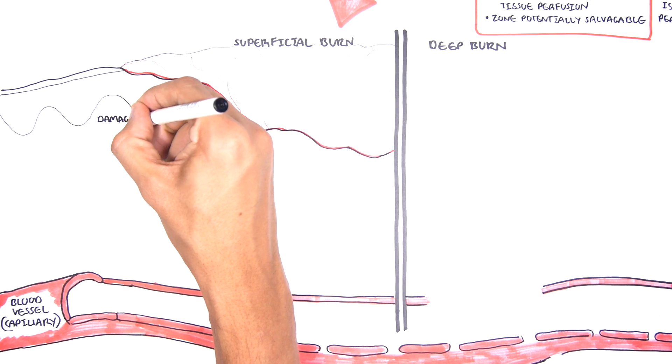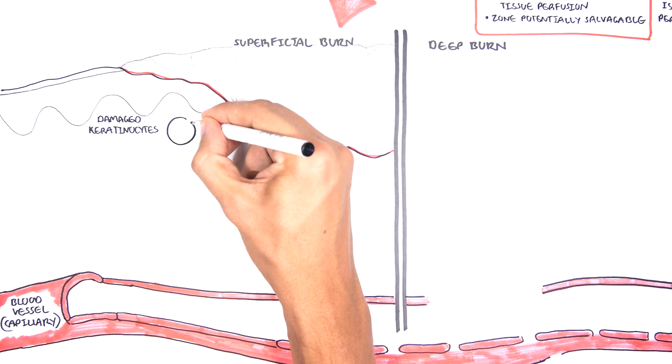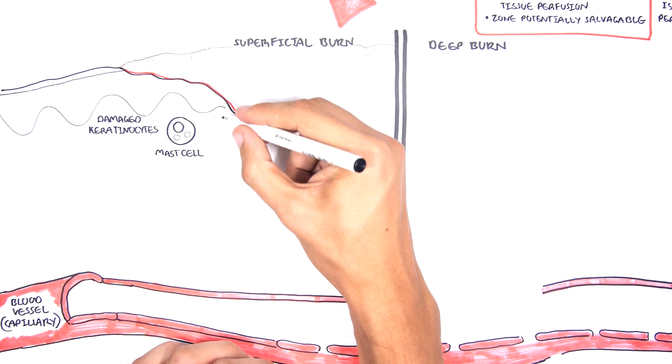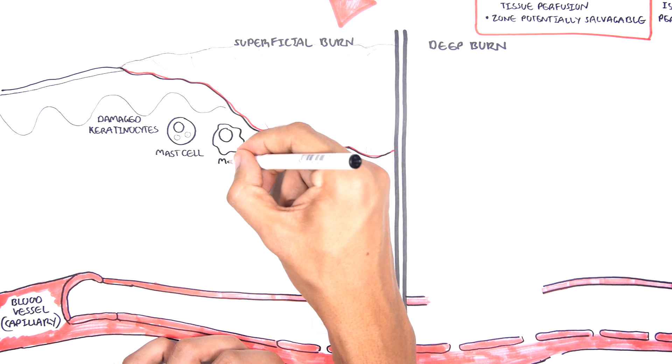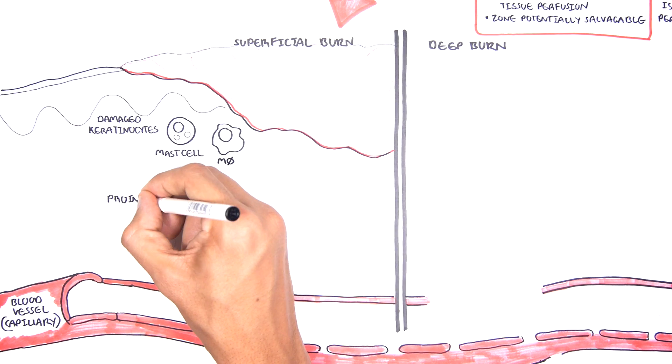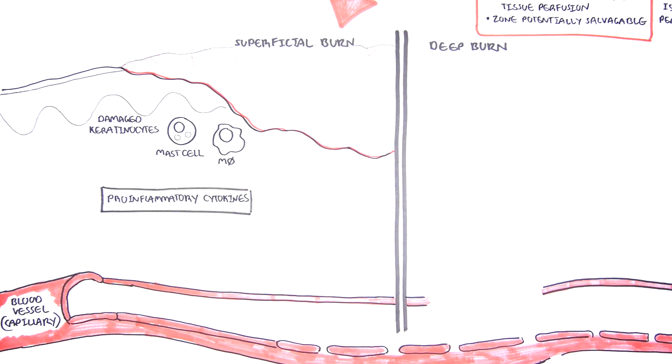Superficial burns will damage the keratinocytes, which are your cells in the epidermis, and will also activate an immune response, so it will activate immune cells around the area, such as mast cells and macrophages. The damaged keratinocytes, the mast cells and the macrophages, will secrete pro-inflammatory cytokines, triggering an immune response.